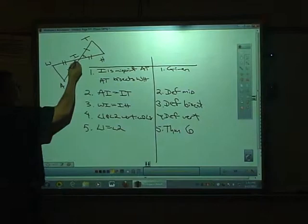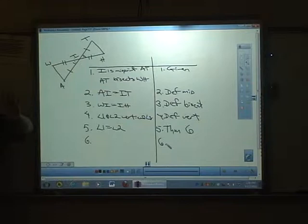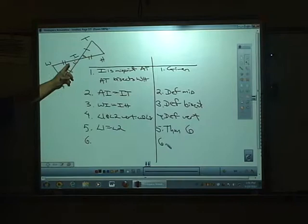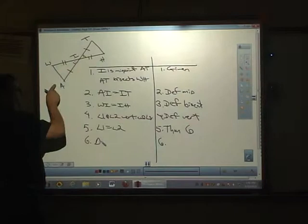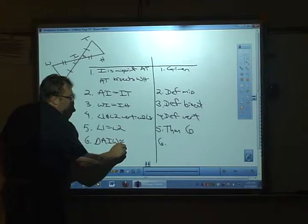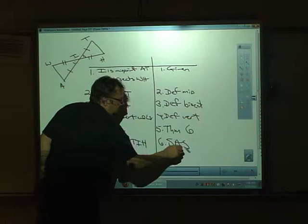So now think about what I've got: those angles are equal, this side equals this side, this side equals this side. I'm trying to prove triangles are congruent. There are three ways I can do that: side-angle-side, angle-side-angle, or side-side-side. I have a side, an angle, and a side. The triangles have to be congruent by side-angle-side — sometimes referred to as SAS. So triangle AIW is congruent to triangle TIH by side-angle-side.